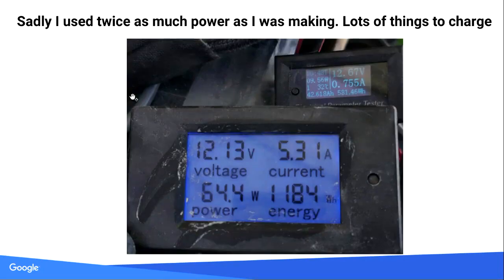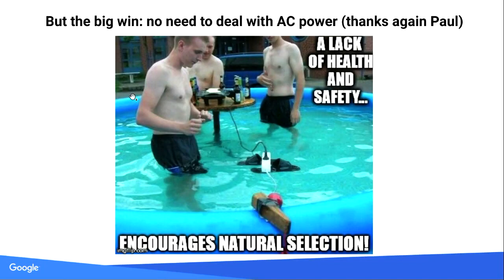These little power monitors — you can buy them from Amazon. This one shows solar panels making 12 volts, delivering 0.7 amps. I've produced 42 amp hours here and used 1.1 kilowatt hours in a few days — partly because of this shirt and a few other things I was charging. The good thing is with DC, you don't have to worry about AC. If you don't need AC, don't use AC — although natural selection, I think we don't have enough natural selection anymore. Do whatever you'd like.